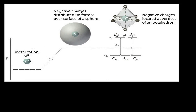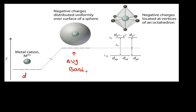Looking at the splitting of d orbitals: initially, when all ligands are very far away, all five d orbitals are degenerate — they have equal energy. As the ligands approach the metal ion, at a particular point they form a spherically symmetrical arrangement, and the energy of all five d orbitals increases but they remain degenerate. This particular state is referred to as the average energy state, or the barycenter. Splitting takes place from this barycenter.